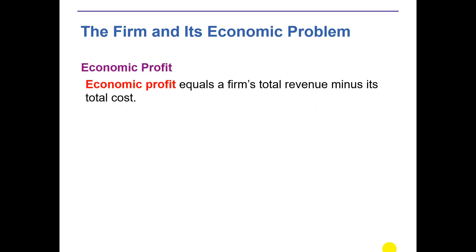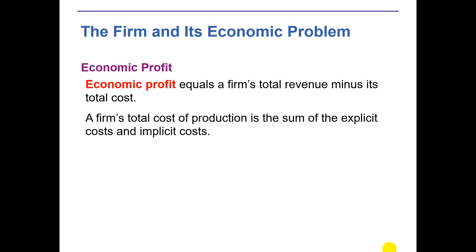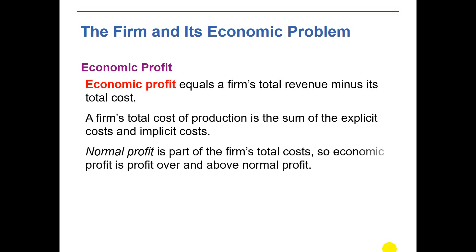Economic profit equals the firm's total revenue minus its total cost. The firm's total cost of production is the sum of explicit cost and implicit cost. Normal profit is part of the firm's total cost. So economic profit is profit over and above normal profit.